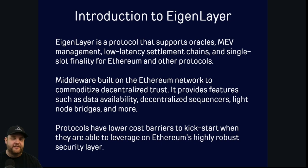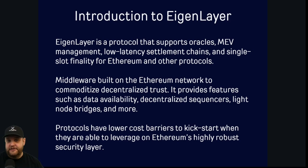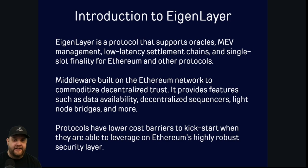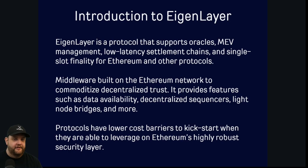It provides features such as data availability, decentralized sequencers for things like layer two rollups, and light node bridges to go from one network to another — for example, from Ethereum to Optimism. These types of protocols typically have a lower cost barrier to entry; they're able to kickstart because they can use that Ethereum security rather than having to build the network security themselves, by leveraging the Eigenlayer technology.